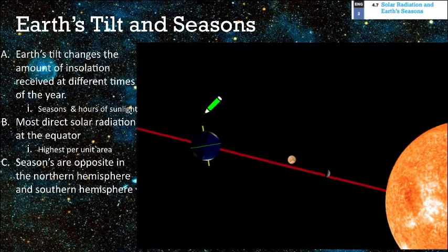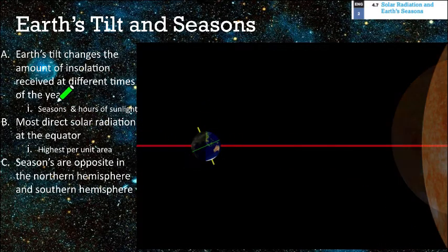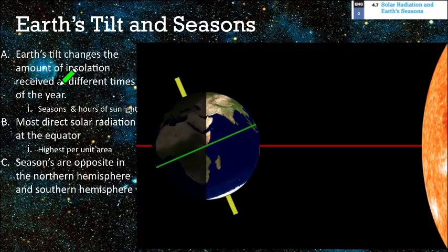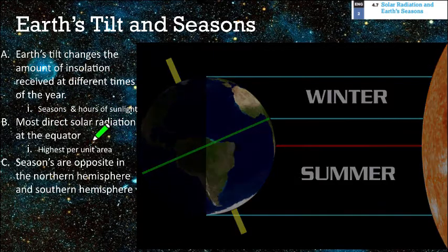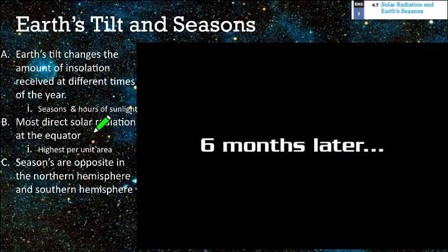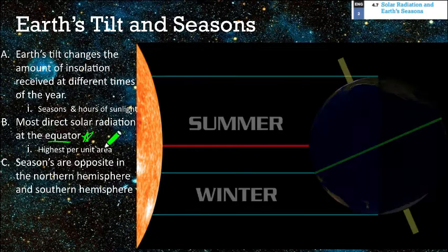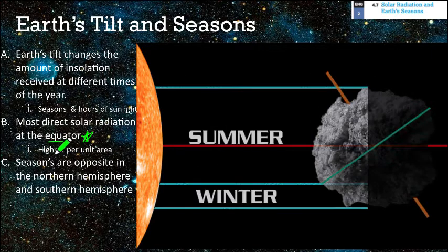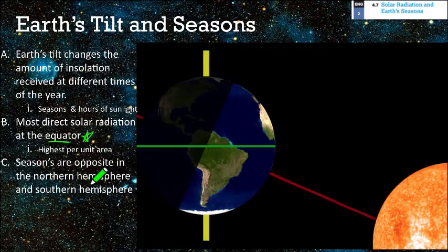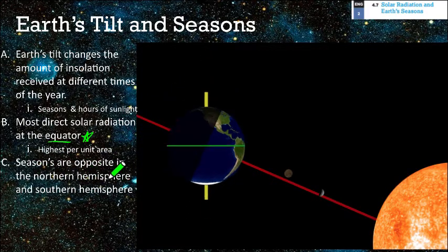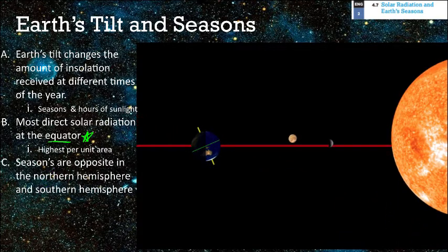Because we're not oriented perfectly vertically, we don't have the same weather year-round. The tilt also determines hours of sunlight, which affects a lot of things. The most direct radiation is at the equator — this is the highest amount of insolation or sunlight per unit area. Seasons are opposite in the northern and southern hemispheres, so summer in the United States would be winter in somewhere like Australia.